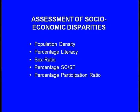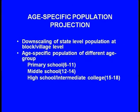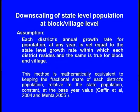The assessment of these disparities is carried out in terms of population density, percentage literacy, sex ratio, percentage of SC/ST, and participation ratio. Thereafter, age-specific population projections are carried out so that we can identify the group of children going at various school levels. This has to be done because the census data only provides the number of children between the age group of 0 to 18 and does not provide categorization by primary, middle, or high school level. Therefore, this has to be downscaled from the state level to the village level population, assuming that each district's annual growth rate is equal to the state-level growth rate.